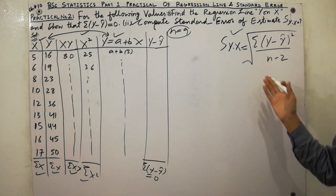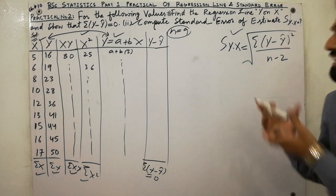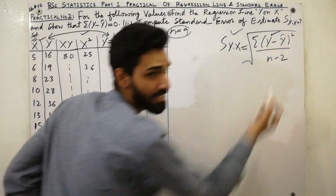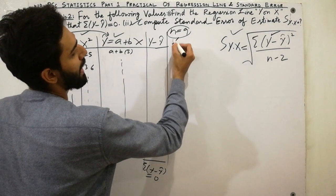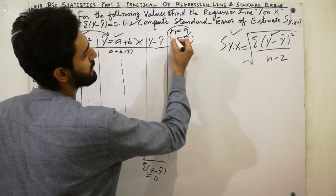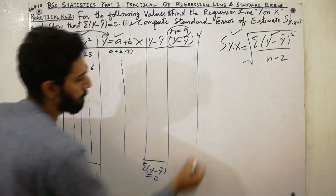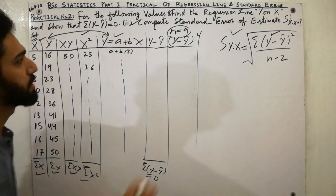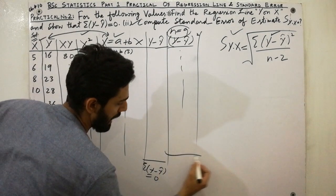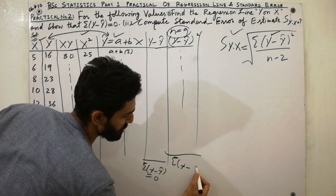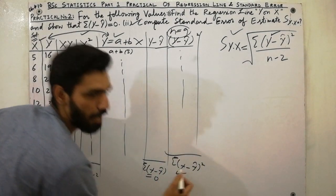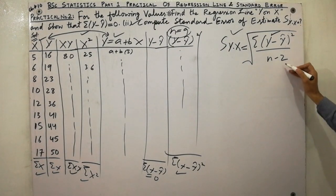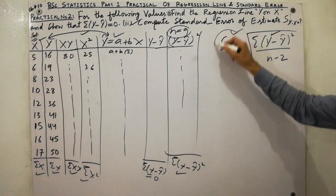To compute it, put each (y − ŷ) value, square it, then sum all squared values to get Σ(y − ŷ)². Place that value in the formula and take the square root divided by (n − 2) to get s(y.x).